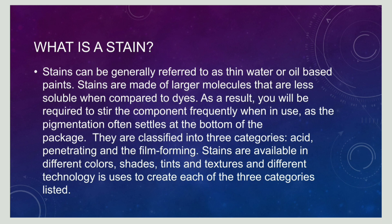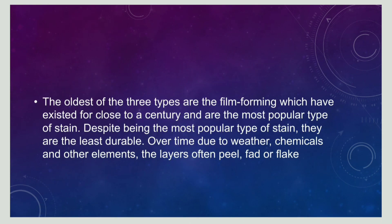Stains are available in different colors, shades, tints, and textures. Among the three types, the oldest type of stain is the film-forming stain. However, this film-forming stain has a negative: it is less durable. Over time, due to weather and chemicals, these layers may peel or fade. This is the major drawback of a film-forming stain.